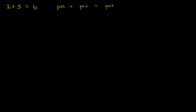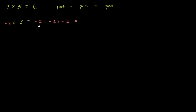Now let's mix it up a little bit and introduce some negative numbers. What happens if I had negative 2 times 3? One way to think about it is you could view this as negative 2 repeatedly added three times. So this could be negative 2 plus negative 2 plus negative 2, which would be equal to: negative 2 plus negative 2 is negative 4, plus another negative 2 is negative 6.